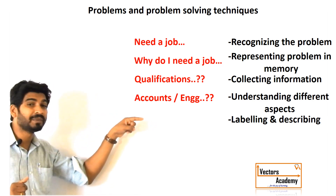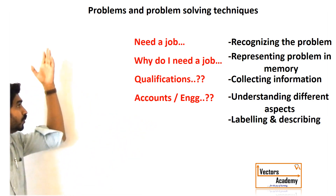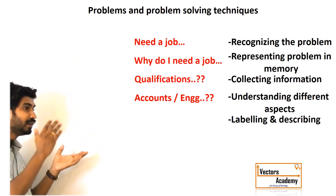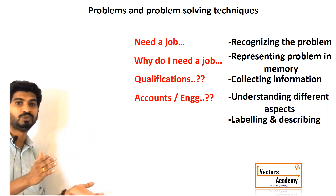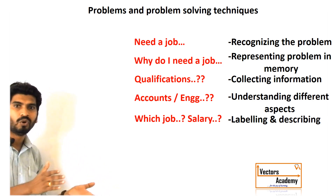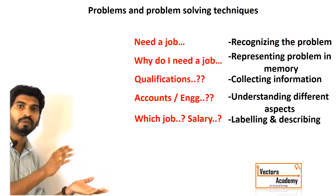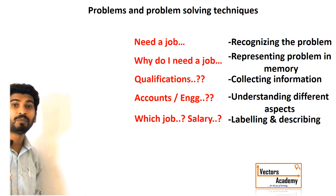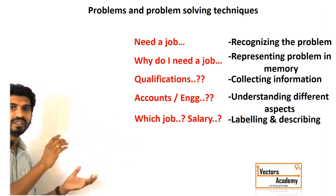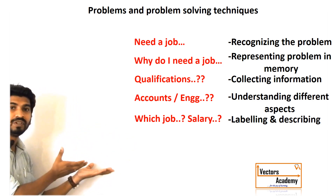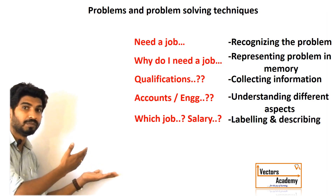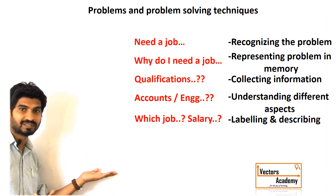The fifth step is labeling and describing the problem. After going through all the previous steps, we finally decide what kind of job we want — a job as an electrician, an MBA role, or a managerial job, depending on the salary we need. This last step is the main step that enables us to solve the problem using various techniques.